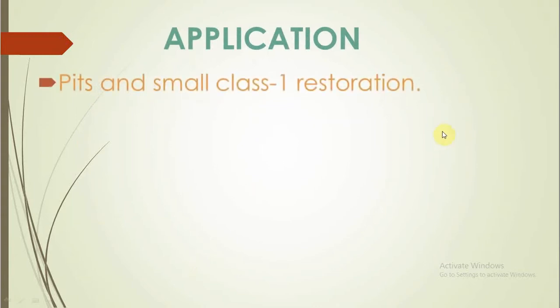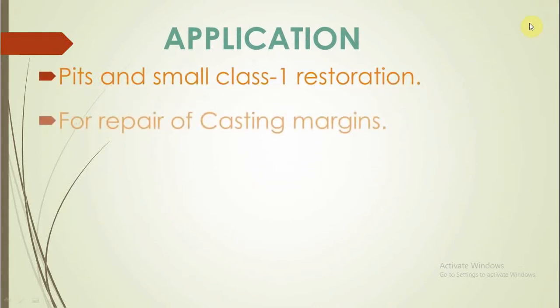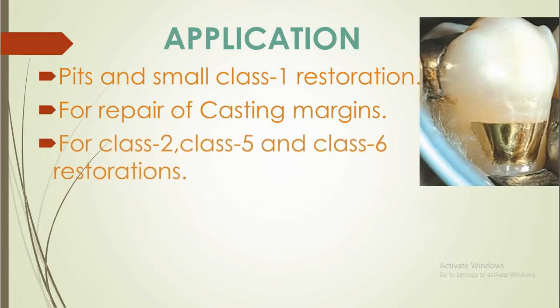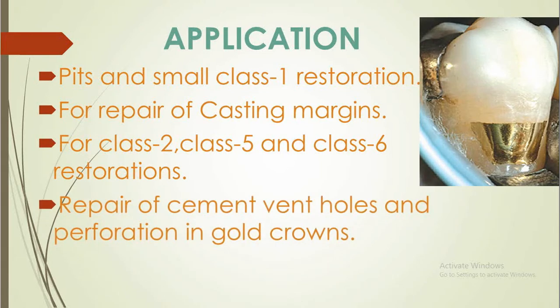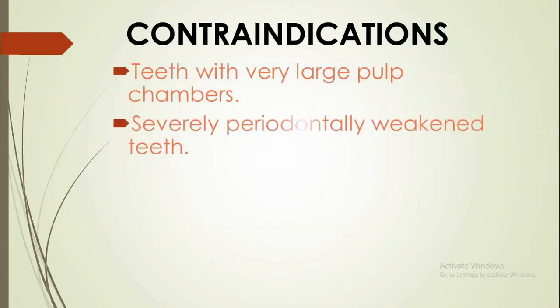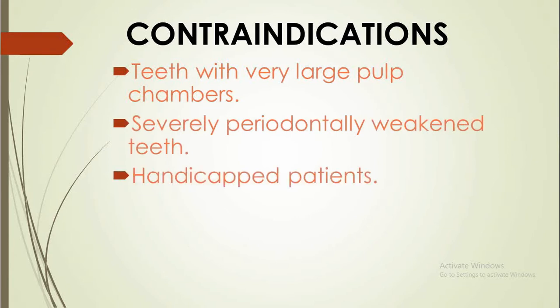Applications of DFG: pit and small class 1 restoration, repair of casting margins, class 2, class 5 and class 6 restorations, and repair of cement vent holes and perforations in gold crowns. It is contraindicated in teeth with large pulp chambers because gold is a metal, in severe periodontally weakened teeth, handicapped patients, and root canal filled teeth.